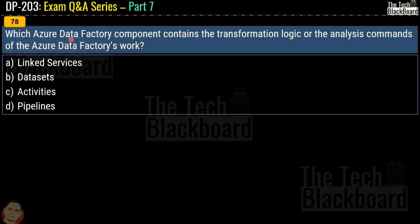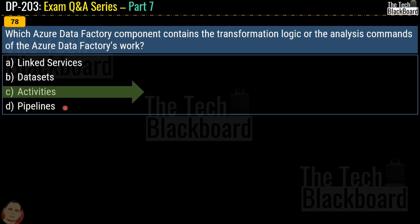Question 78: which Azure Data Factory component contains the transformation logic or the analysis command of Azure Data Factory's work? Options are linked service, datasets, activities, or pipeline. The correct answer is option C, activities.